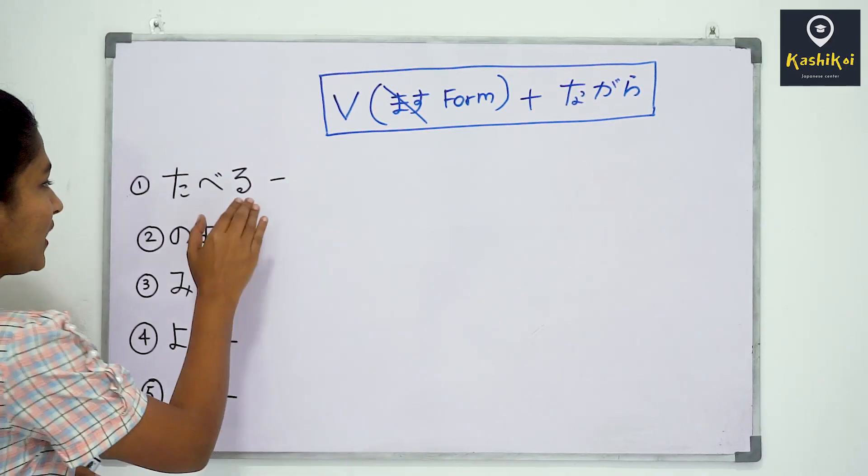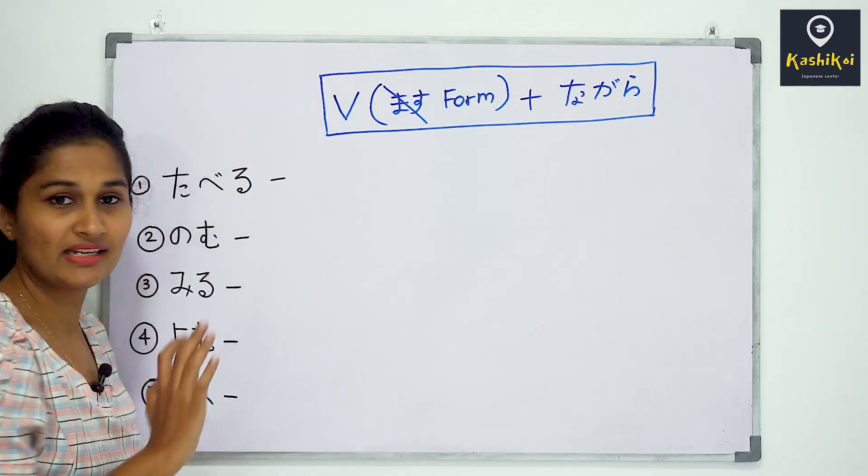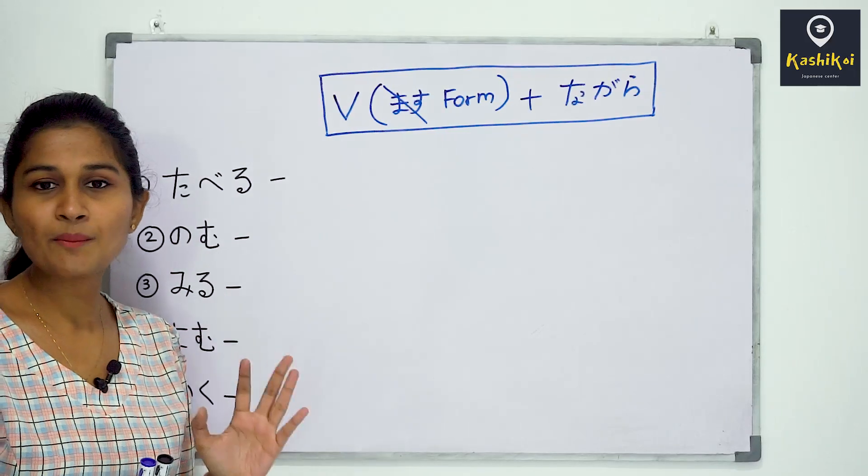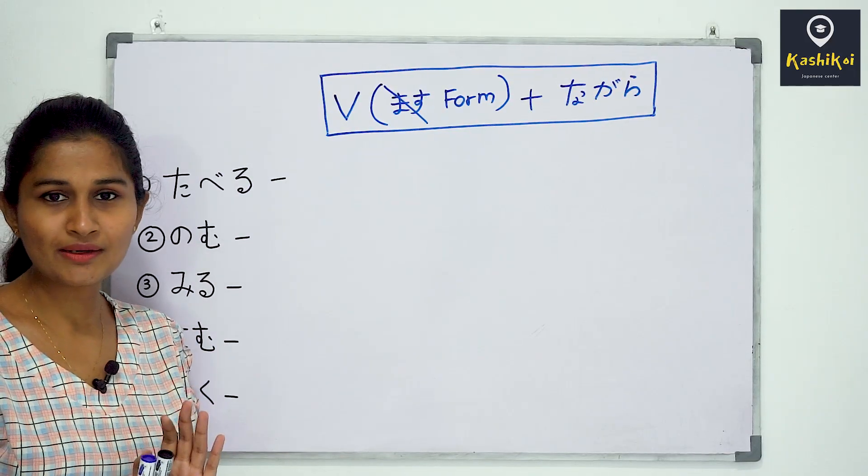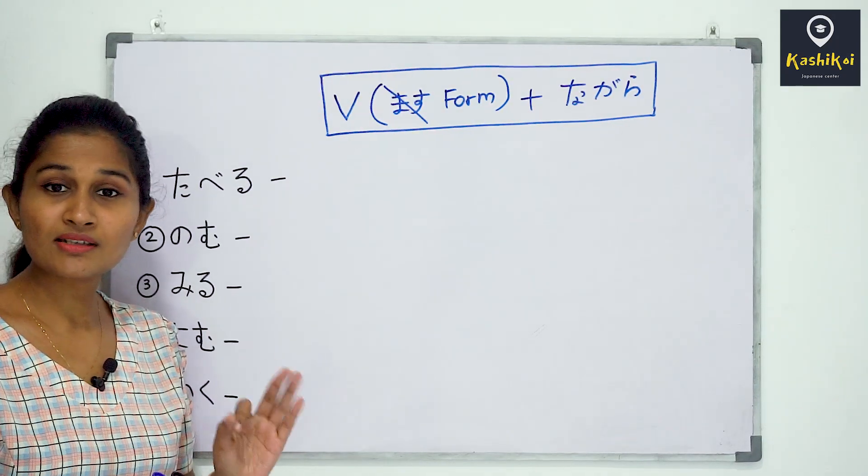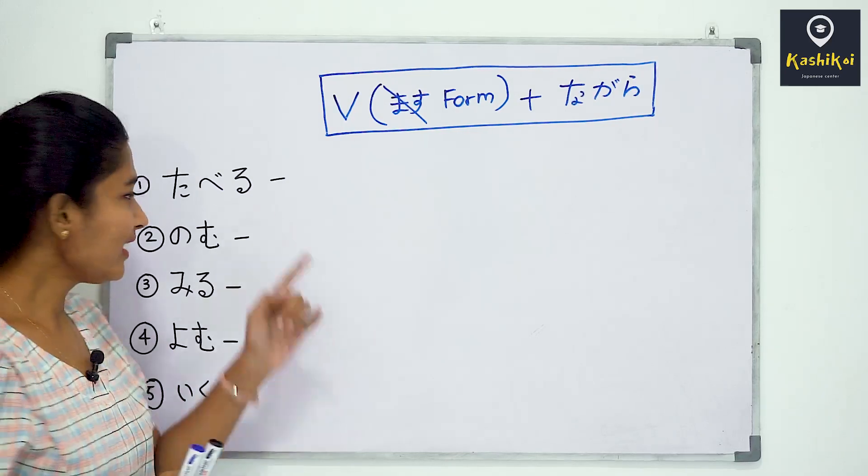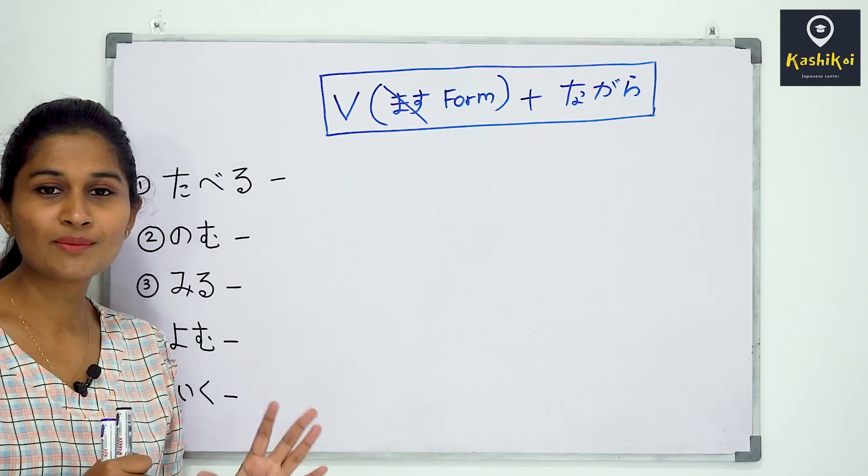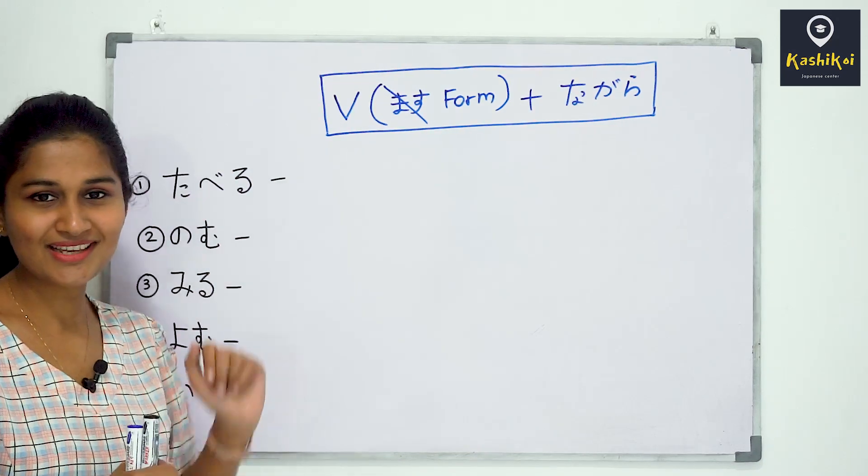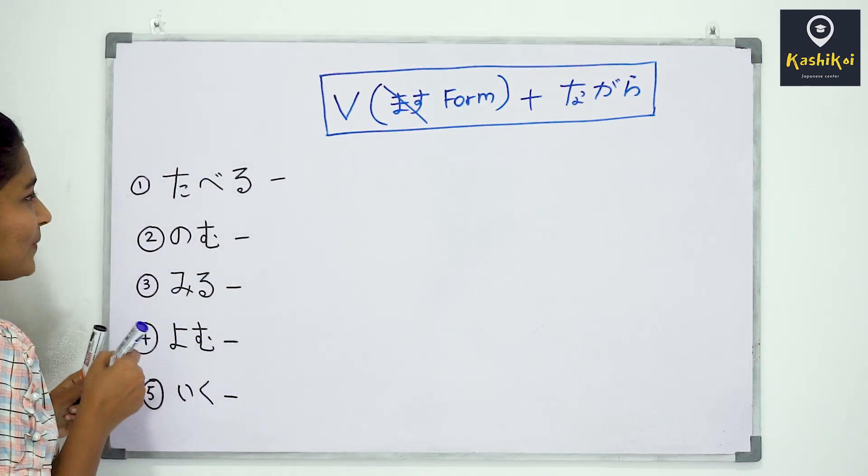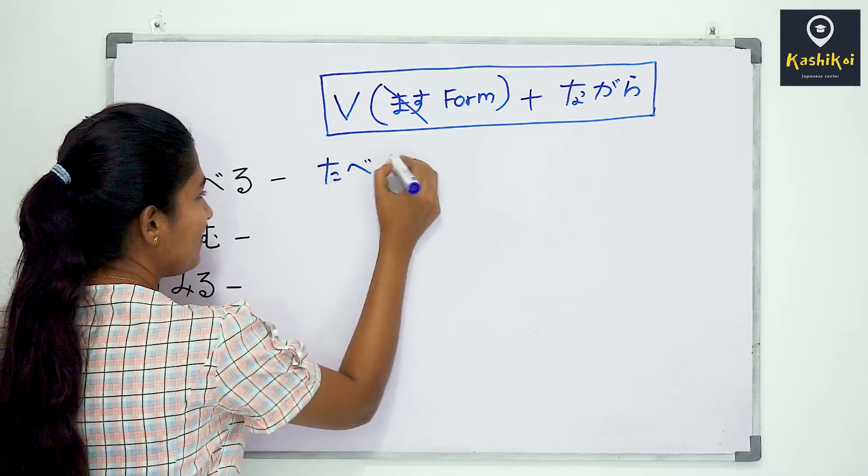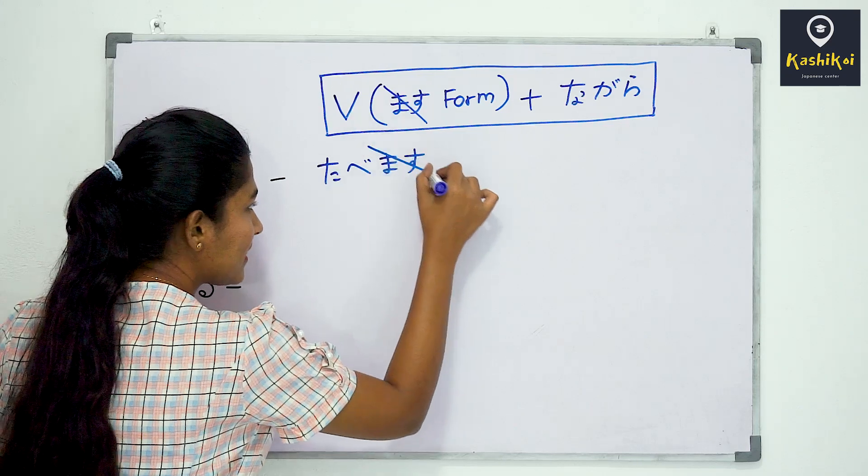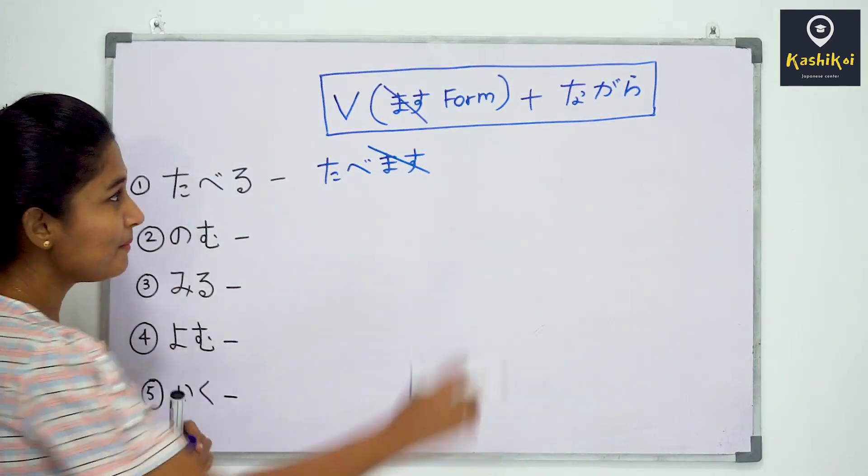First we should understand how verb groups work. We have first group, second group, and third group verbs. When we turn into second group, we change to masu form. So this group should be used in masu form.